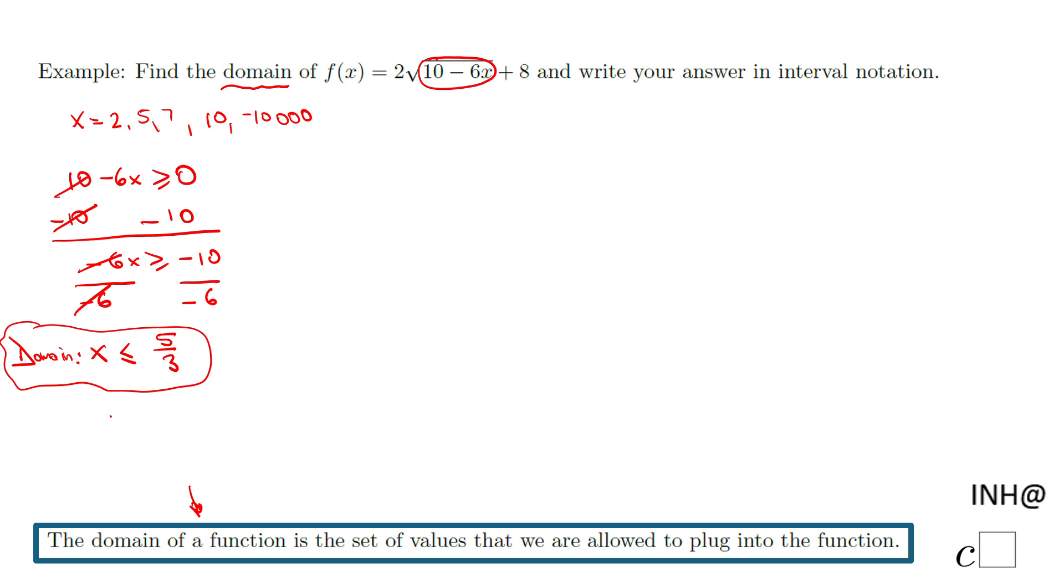And here be sure you put a bracket because we have the equal sign. The domain of this square root function is any number less or equals 5 thirds, or you see the interval notation here.